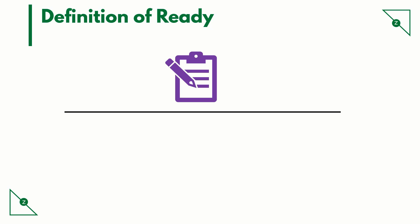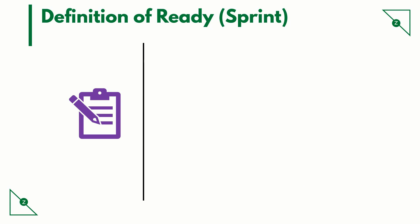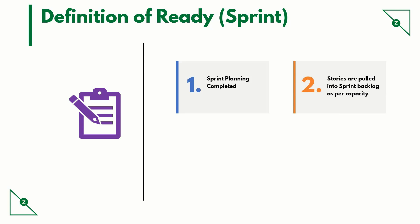Definition of ready can be defined for the following, but not limited to them: sprint, story, and release. Here are some example pointers for definition of ready for a sprint. The sprint planning has been completed. Stories are pulled into the sprint backlog as per capacity. Stories have tasks created under them with original estimate, and the original estimates are typically in hours.